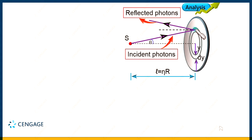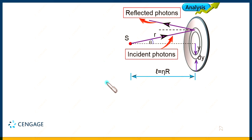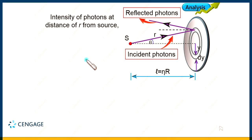Now we need to find the intensity magnitude over the ring surface. Let the distance from the point source to the ring be small r. Since this is a point source, we find the intensity using the formula: power divided by surface area. If we take a sphere of radius r, the intensity of the radiation is constant over the sphere. That means the intensity at the ring position is I = P divided by 4πr².